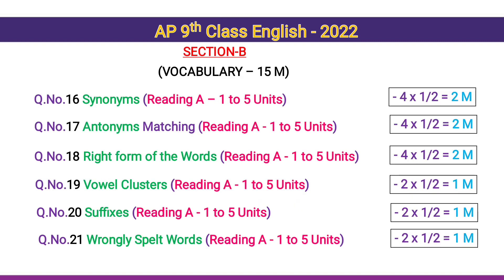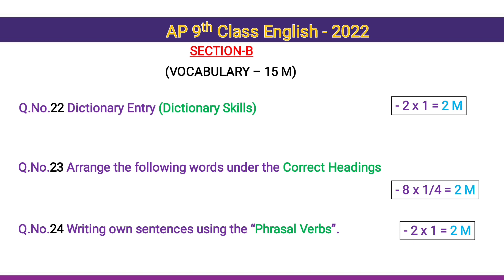Section B: Vocabulary for 15 marks. Question 16: Synonyms from Reading A of Units 1 to 5 — 4 halves for 2 marks. Question 17: Antonyms matching from Reading A, Units 1 to 5 — 4 halves for 2 marks. Question 18: Right form of words from Reading A, Units 1 to 5 — 4 halves for 2 marks. Question 19: Word clusters from Reading A, Units 1 to 5 — 2 halves for 1 mark. Question 20: Suffixes, Reading A Units 1 to 5 — 2 halves for 1 mark. Question 21: Wrongly spelled words, Reading A Units 1 to 5 — 2 halves for 1 mark. Question 22: Dictionary entry / dictionary skills — 2 questions for 2 marks.